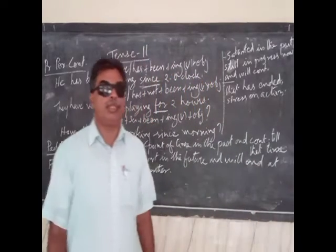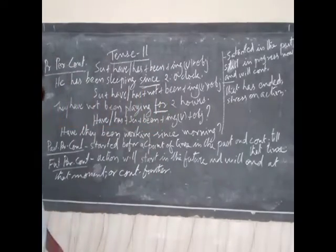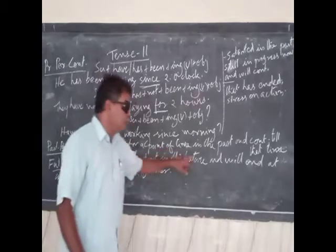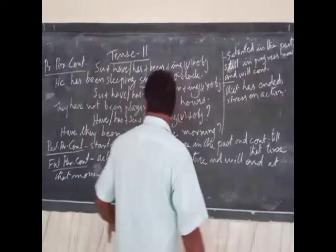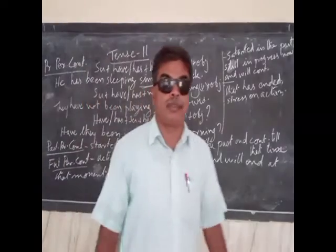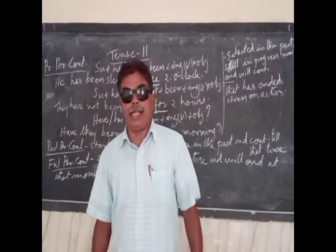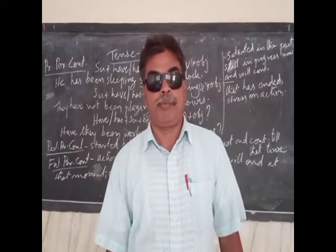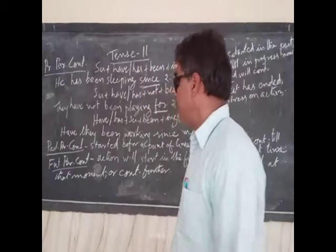We use future perfect continuous tense to talk about an action which will start in the future, continue up to a point of reference in the future, and may end at that moment or continue further. We use future perfect continuous tense to talk about that.